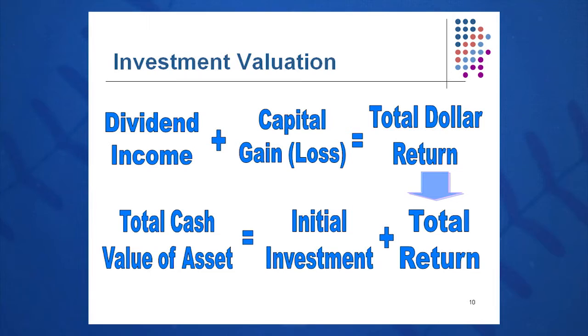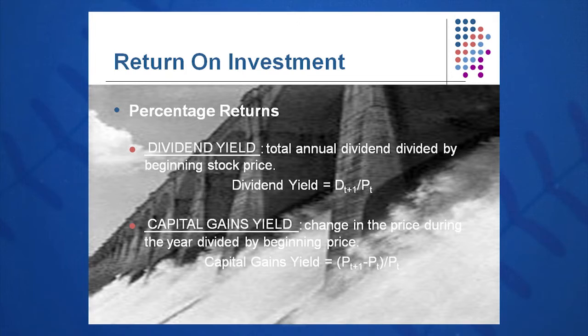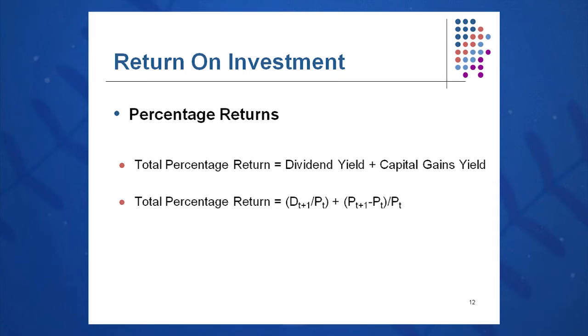We often prefer to talk about percentage returns. If you say you invested $1,000 and made $480, people get somewhat excited. But if you say you made a 48% return on investment, everyone wants to know what stock you bought. We break total return into dividend yield — D1 over P0, or D sub T+1 over P sub T — and capital gains yield, which is P sub T+1 minus P sub T over P sub T. Total percent return is D sub T+1 over P sub T plus P sub T+1 minus P sub T over P sub T.